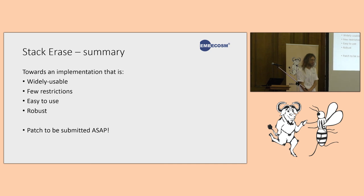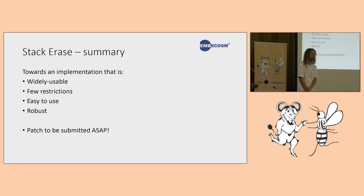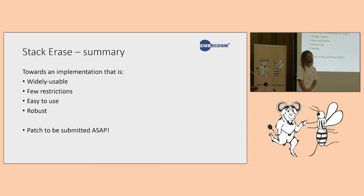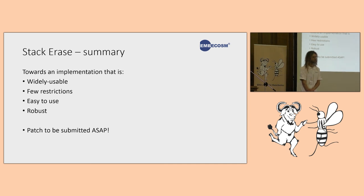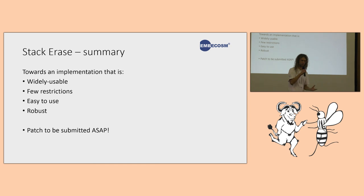A post-talk comment noted that the Linux kernel has a similar project called the 'stack leak project' with implementations for x86 and aarch64, currently using a GCC plugin. It would be useful to coordinate with Linux kernel developers when submitting this to GCC trunk, so that the kernel can potentially move away from the plugin. There are less than two months until the GCC 9 feature freeze, so the patch should go to the mailing list soon.